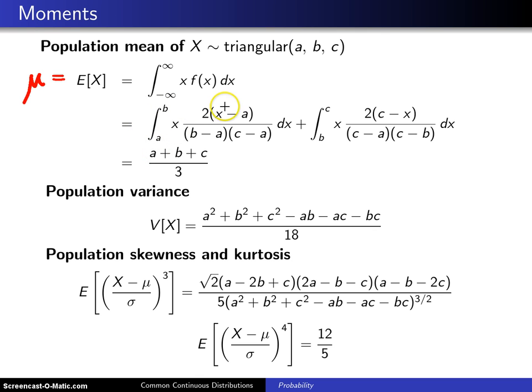This is a to b of x times f of x on that first portion dx, plus the integral from the mode b to the maximum c of x times the probability density function on that second piece. The details of that integration are left out, but the result is very tractable. It turns out that the population mean is the average of the three parameters, a plus b plus c divided by three.